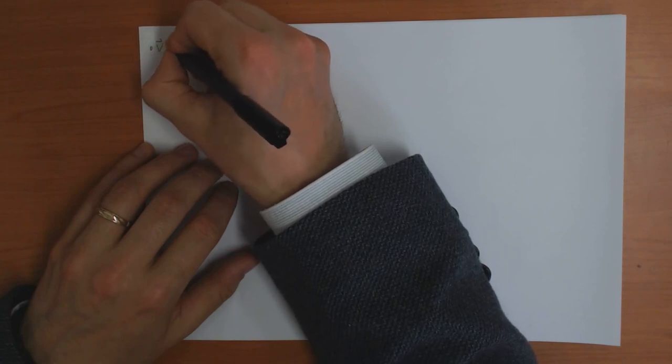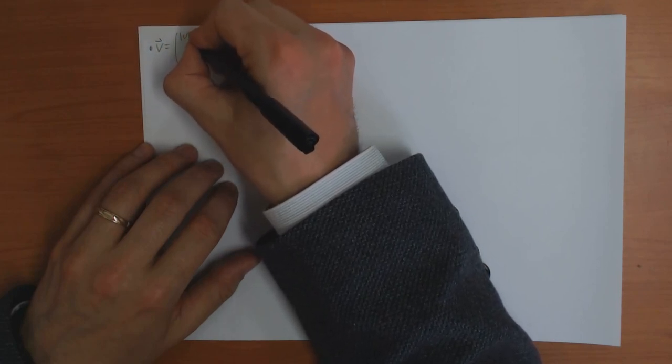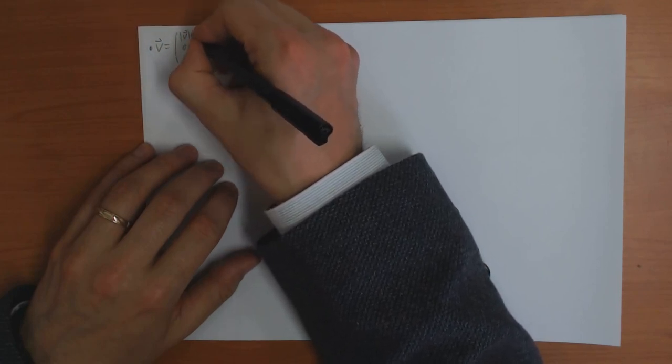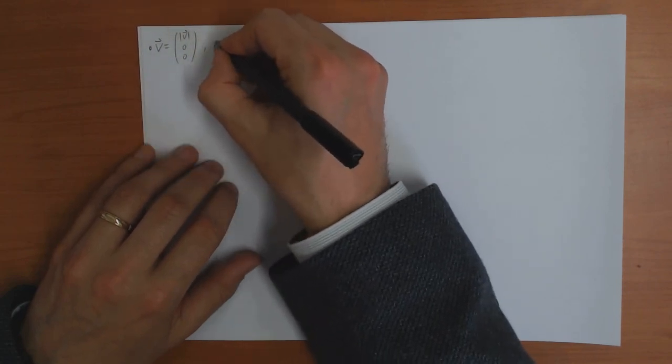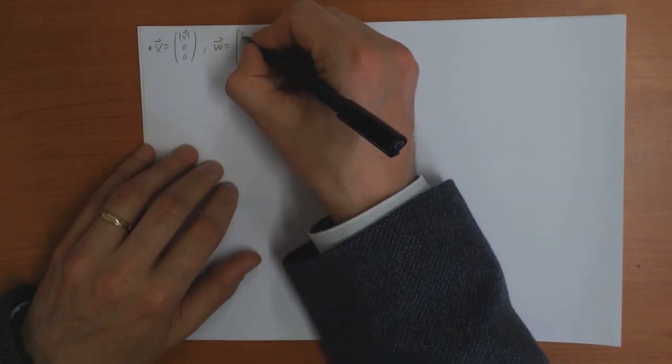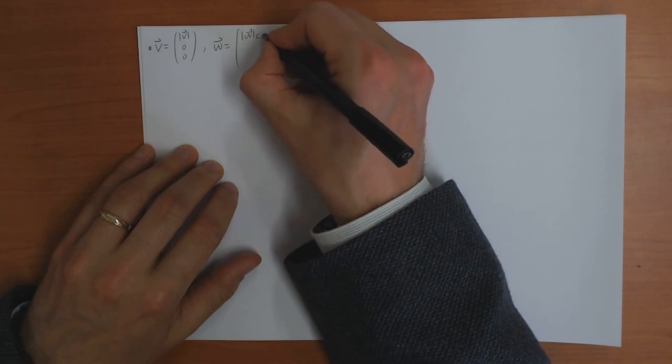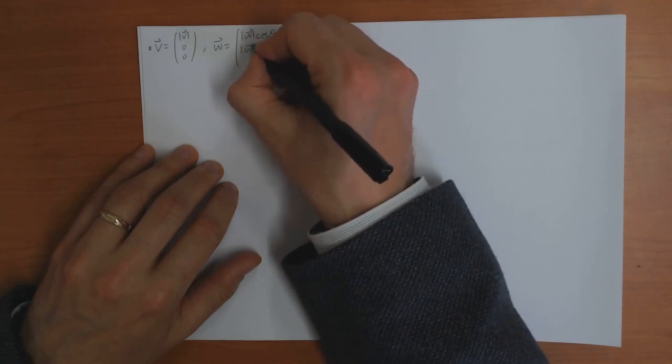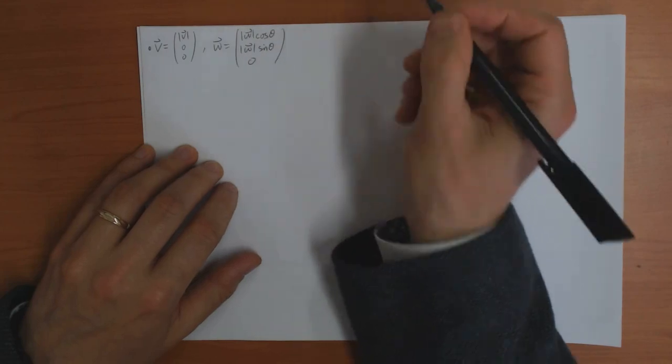Okay. So just to write a conclusion, then, v is length of v, zero, zero. W is w cos theta, w sine theta, zero.